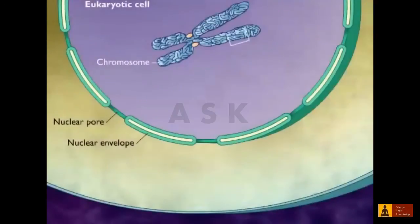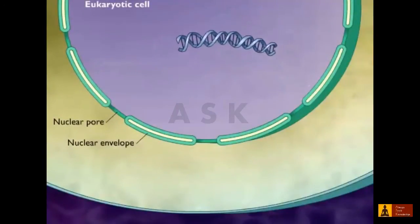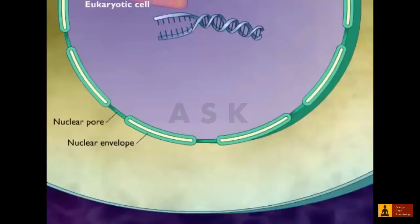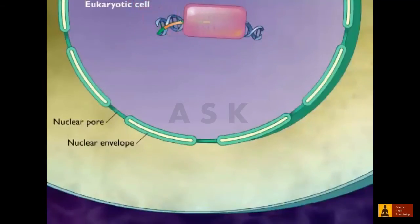Because eukaryotic cells possess a nucleus, their mRNA must be completely formed and must pass across the nuclear envelope before translation.